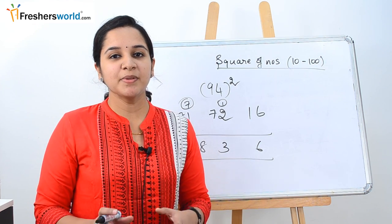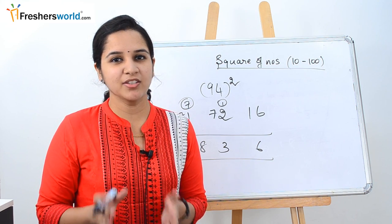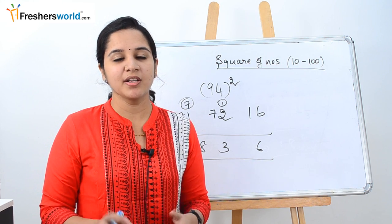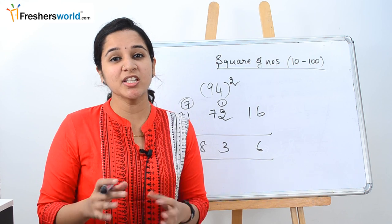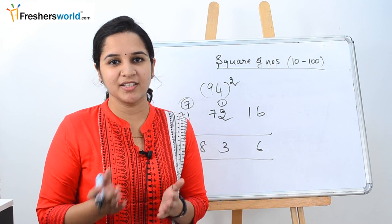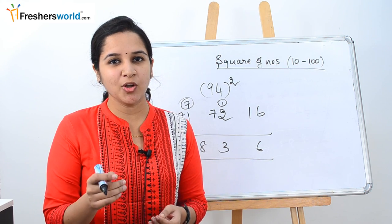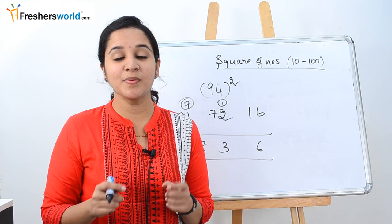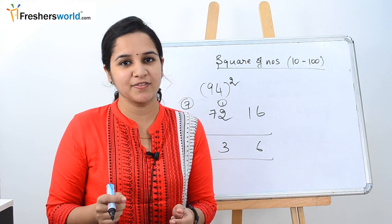So this is a simple way. In today's video we learned how easily we can find the square of the numbers from 10 to 100 with a very simple method. So initially it's going to take you much time for you to understand the concept. So once you understand the concept and with much better practice, you will be easily able to find the square of the numbers within 5 seconds.